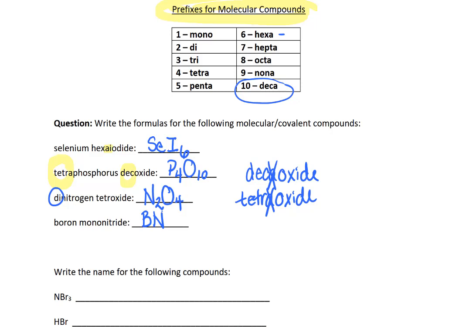When you look through these names, recognize that you always have to tell the reader how many there are of the second element. See how we included mono? And if there's only one of the first element, you don't need to include mono. See how we didn't include mono up here in front of selenium?